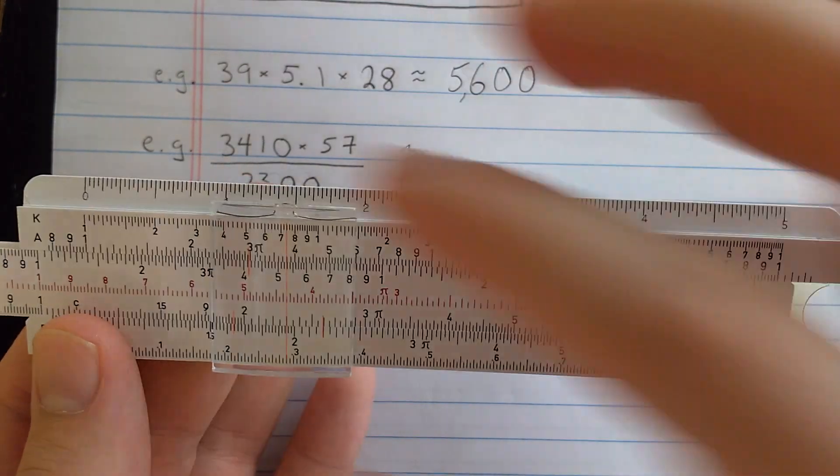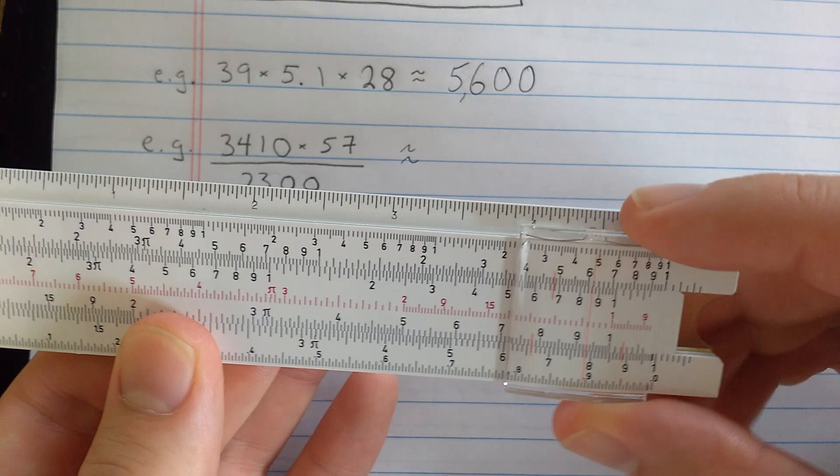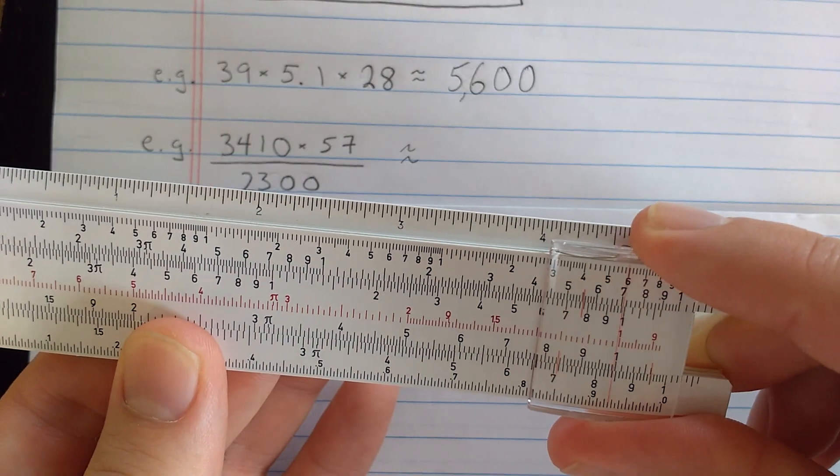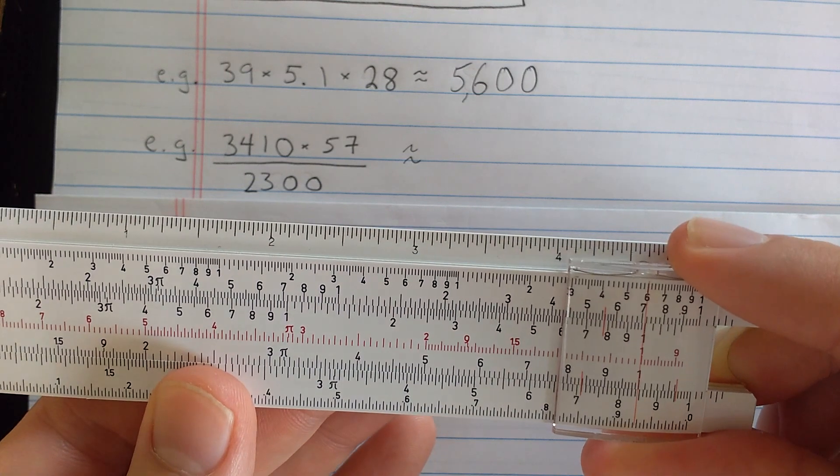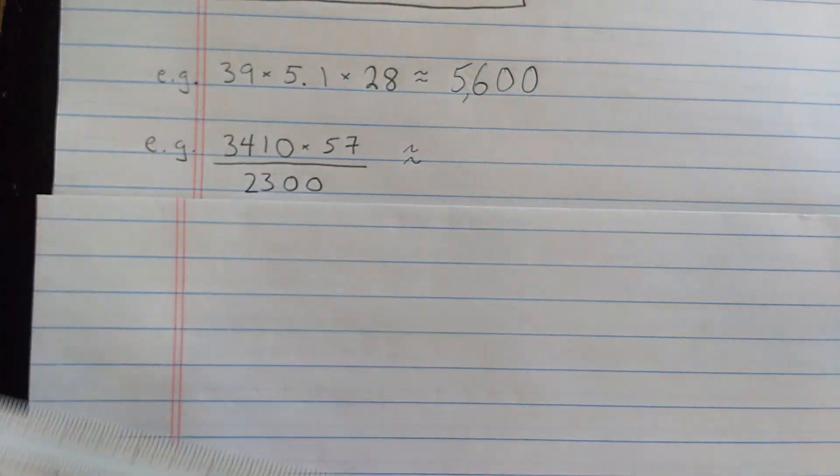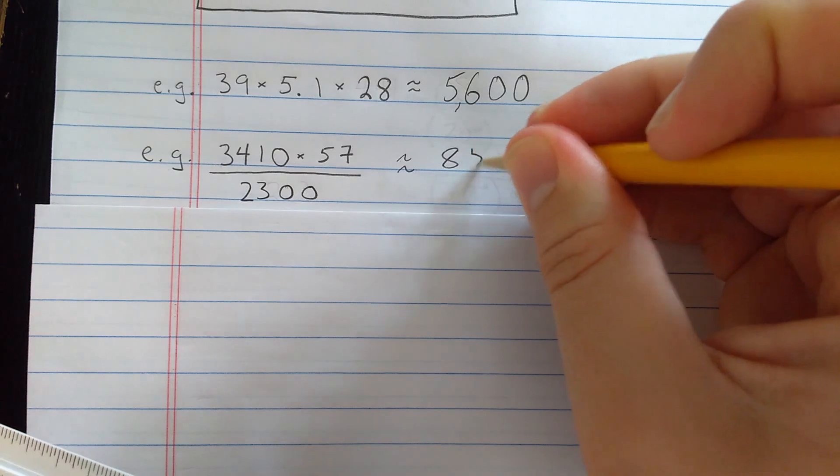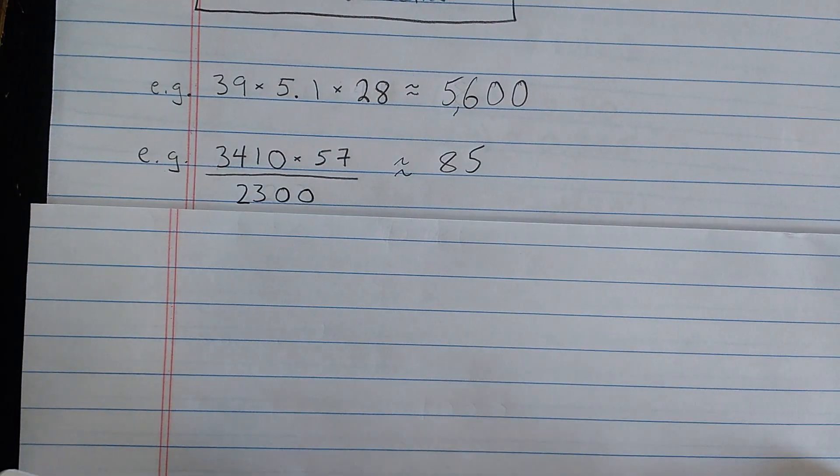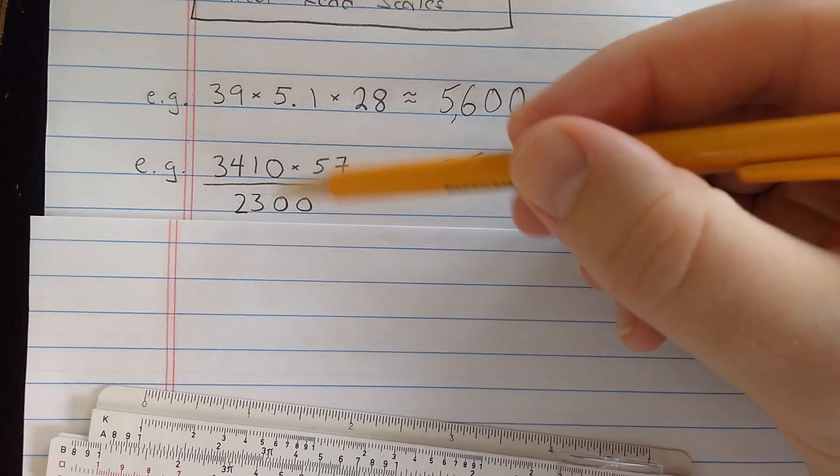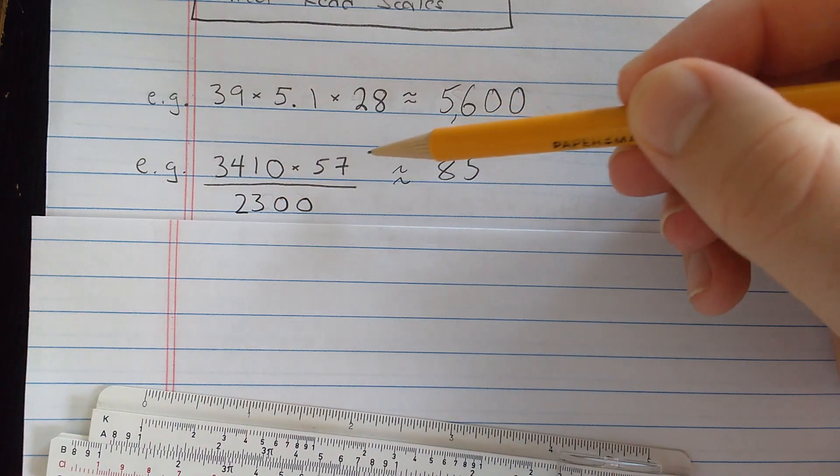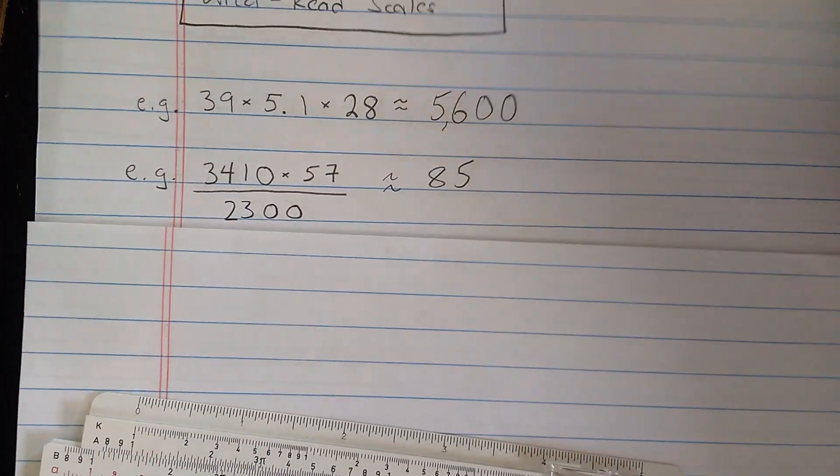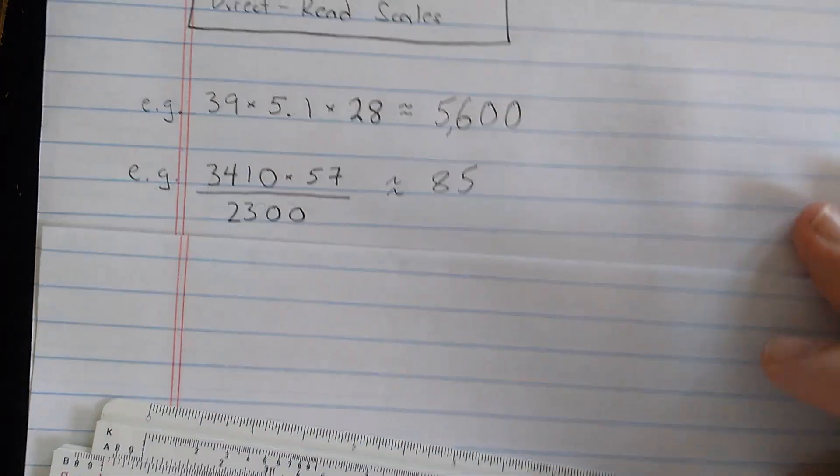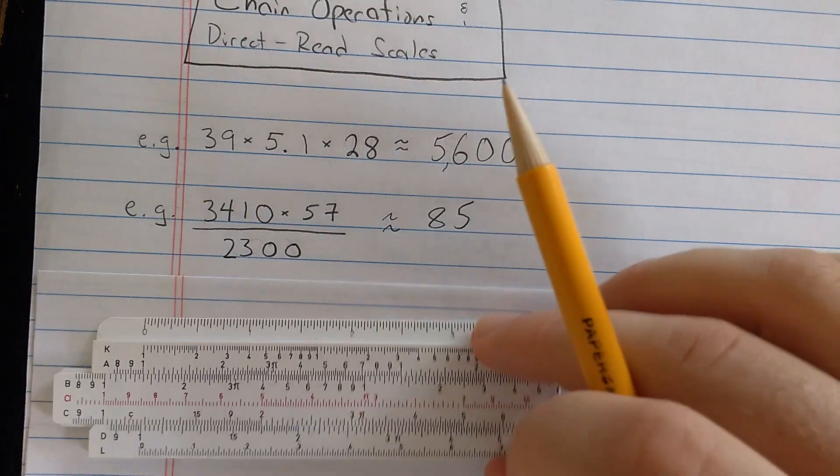Then, again, using this technique, one of the indices should be on scale. And here, I get results about, I'm going to estimate that at 8.5. And then thinking about where I should put the decimal point, this number over this number, a little over 1, times that, looks correct as it is. So that's how you can chain operations, multiple multiplications or divisions.